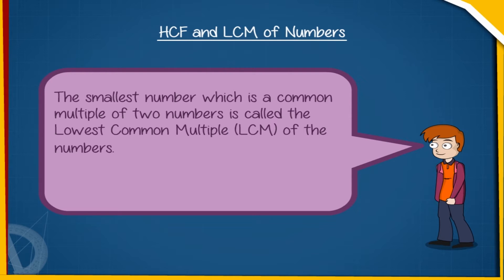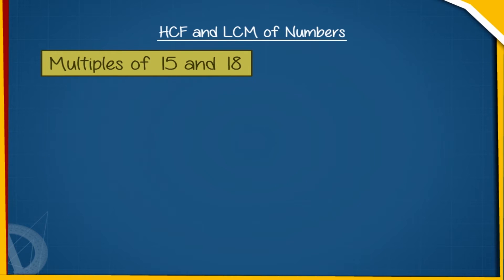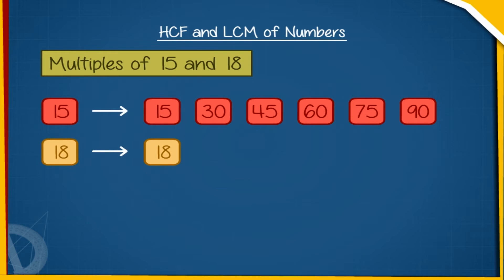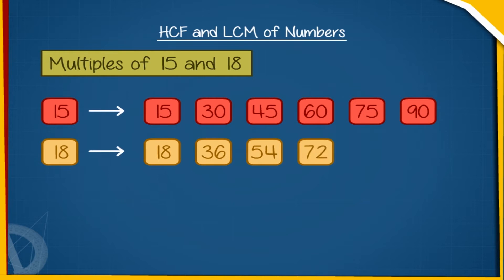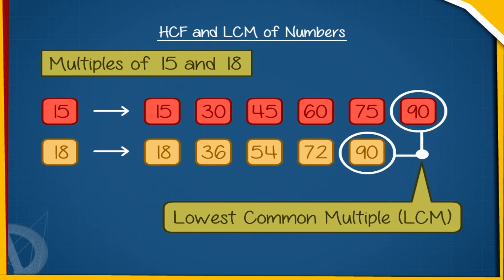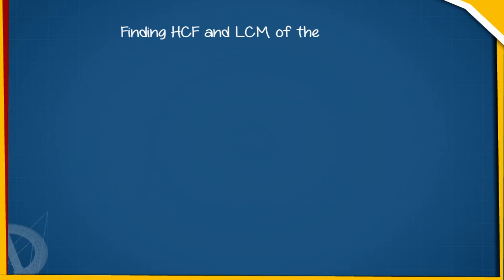The smallest number which is a common multiple of two numbers is called the Lowest Common Multiple or LCM. The multiples of 15 are 15, 30, 45, 60, 75, 90, and so on. The multiples of 18 are 18, 36, 54, 72, 90, and so on. We see that 90 is the lowest multiple common to both 15 and 18. Therefore, the LCM of 15 and 18 is 90.